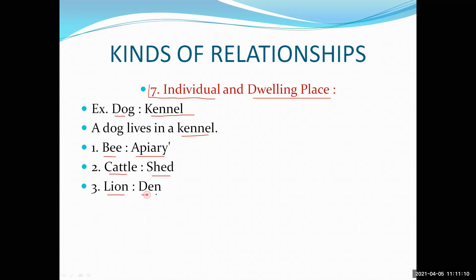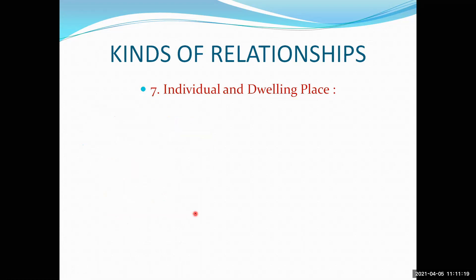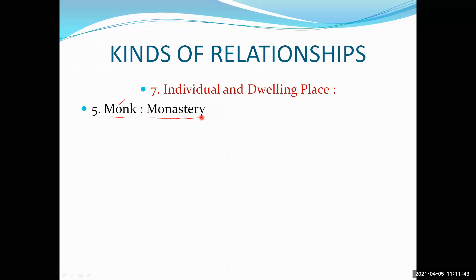Lion lives in a den — den is nothing but a cave. Poultry — we find poultry on a farm. Monk is a person who lives away from his family. In Western Christian culture, there are monks and nuns. A monk is like a saint, and he lives in a monastery, where monks do rituals and worship.